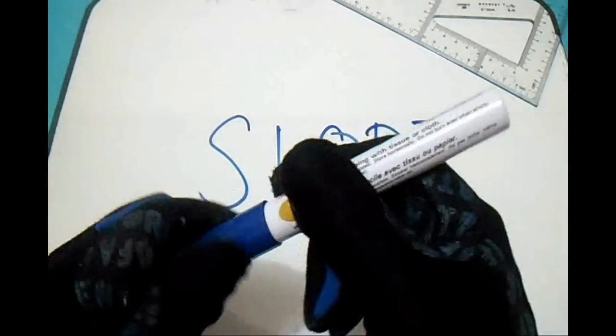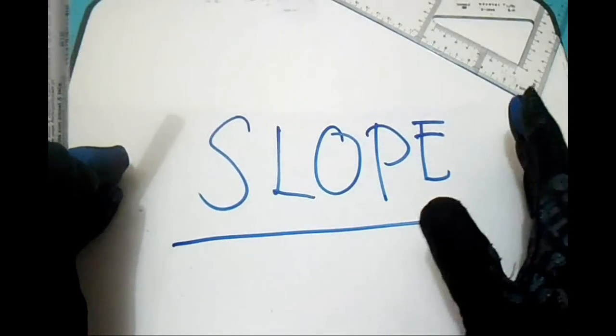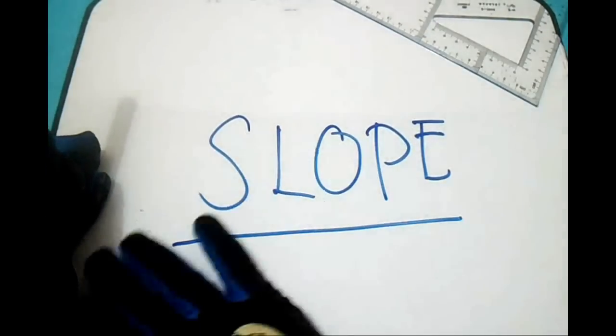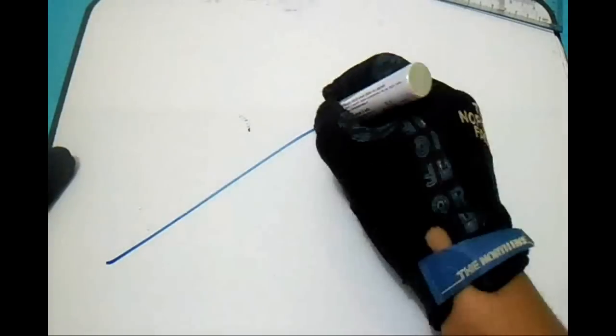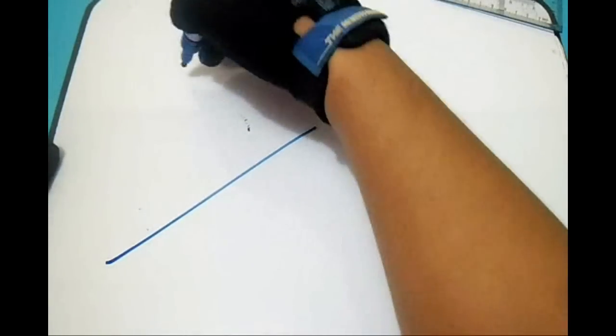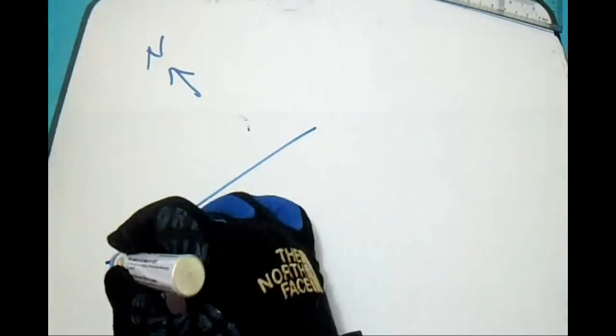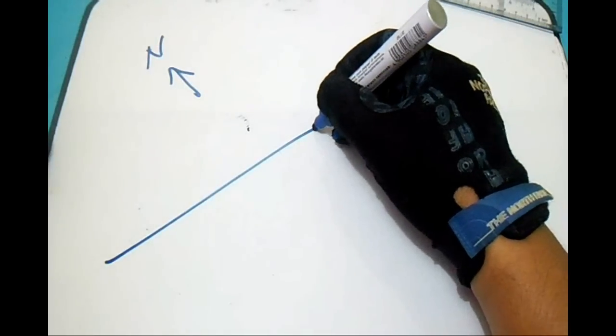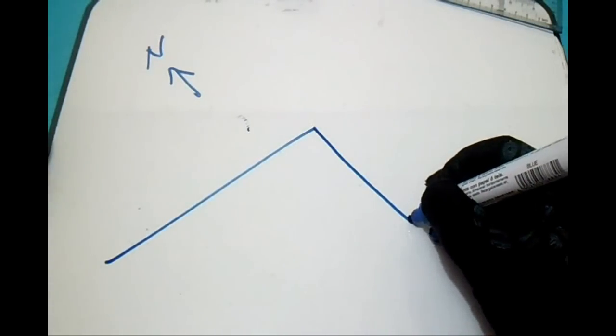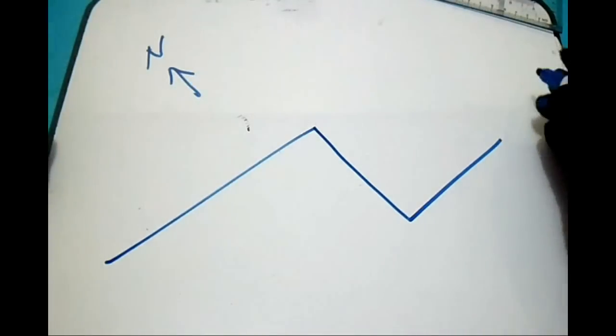This slope you will see in the isometric drawing. For example, we have this line. We have north here, and this line is going to east, then going to south, and then going to east again.